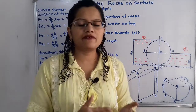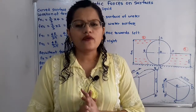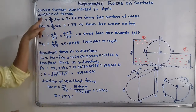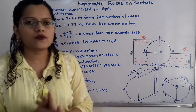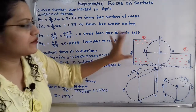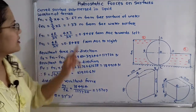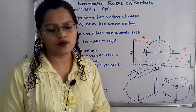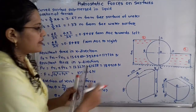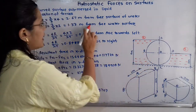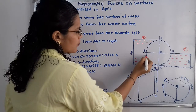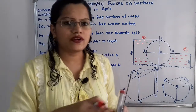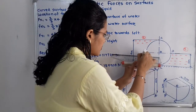Now we plot the calculated forces FX1, FX2, FY1, and FY2. First, we find the location of FX1. The formula gives (2/3) × height = (2/3) × 4 = 2.67 meters from the free surface of water. So FX1 acts at 2.67 meters below the free surface, which is below the midpoint at 2 meters. This is the horizontal force acting in the x-direction.